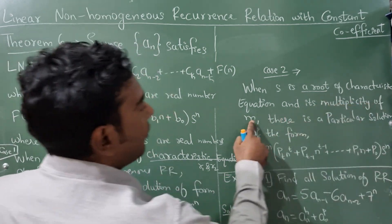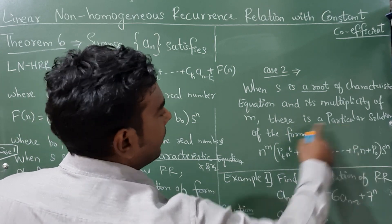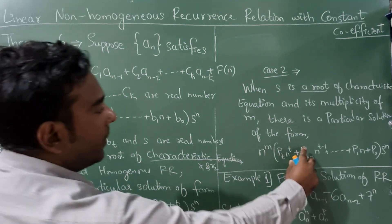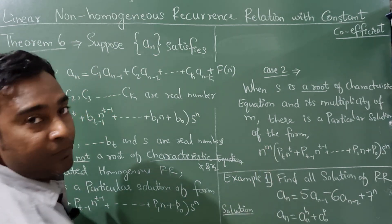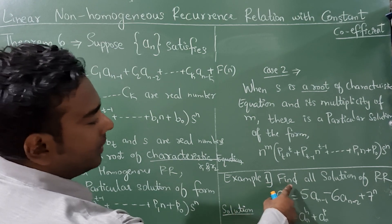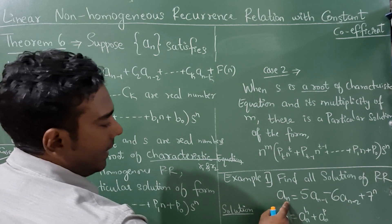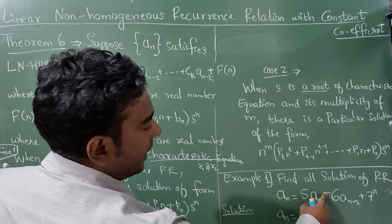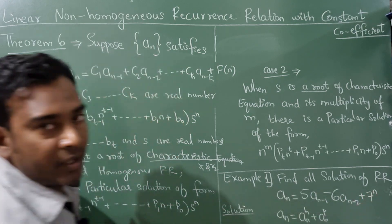In Case 2, when s is a root of the characteristic equation with multiplicity m, there is a particular solution of the same form but multiplied by n^m. Now let us consider an example: find all solutions of the recurrence relation a(n) = 5·a(n-1) - 6·a(n-2) + 7^n.